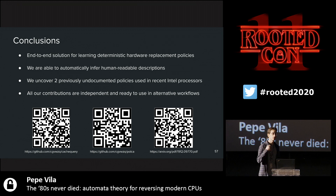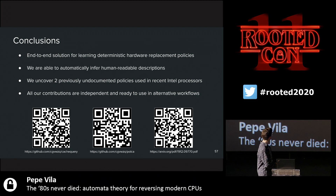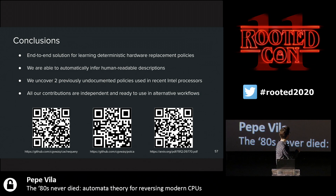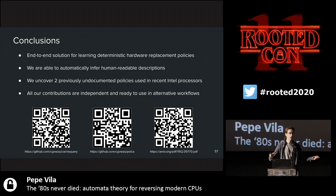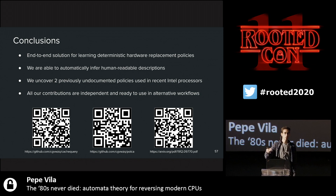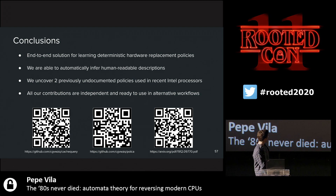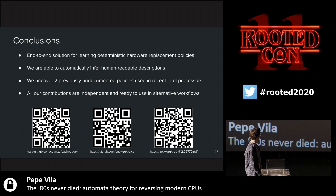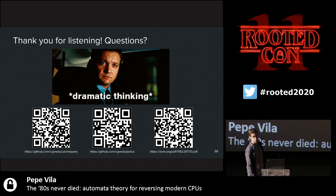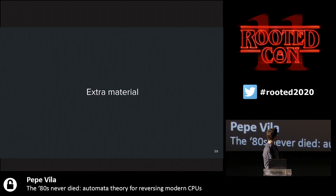In conclusion: we present an end-to-end solution for learning deterministic hardware replacement policies. We can automatically infer human-readable descriptions, and we've uncovered two previously undocumented policies used in recent Intel processors. This is interesting not only for security but also for hardware simulators — knowing the exact replacement policy means simulators can match real hardware behavior. The tools are: CacheQuery (hardware interface), Polka (abstraction layer), and LearnLib (automata learning).